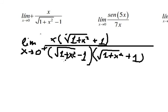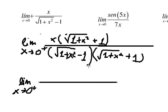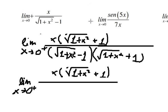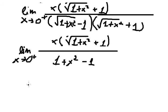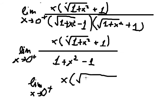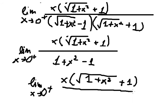This gives us a squared minus b squared in the numerator. We get 1 plus x squared minus 1, which simplifies. The ones cancel out, leaving x squared on top, and we simplify further with x.